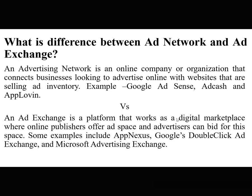What is the difference between an ad network and an ad exchange? This is a basic question, but it's good to mix advanced and basic questions. An advertising network is an online company or organization that connects businesses looking to advertise online with websites that are selling ad inventory — examples include Google AdSense, AdCash, and AppLovin. An ad exchange is a platform that works as a digital marketplace where online publishers offer ad space and advertisers can bid for it — examples include AppNexus, Google's DoubleClick Ad Exchange, and Microsoft Advertising Exchange.